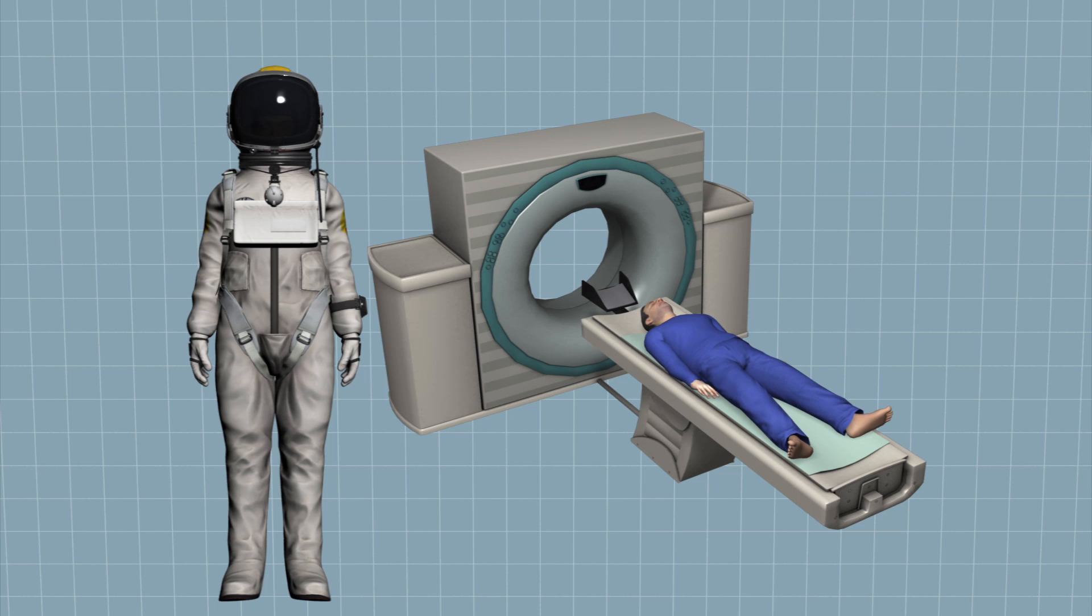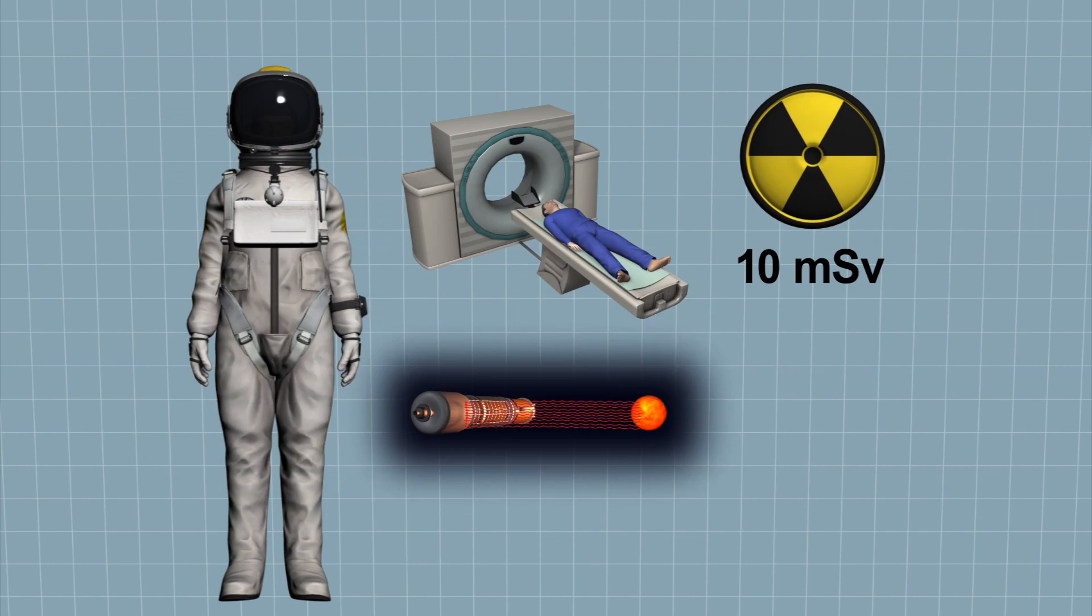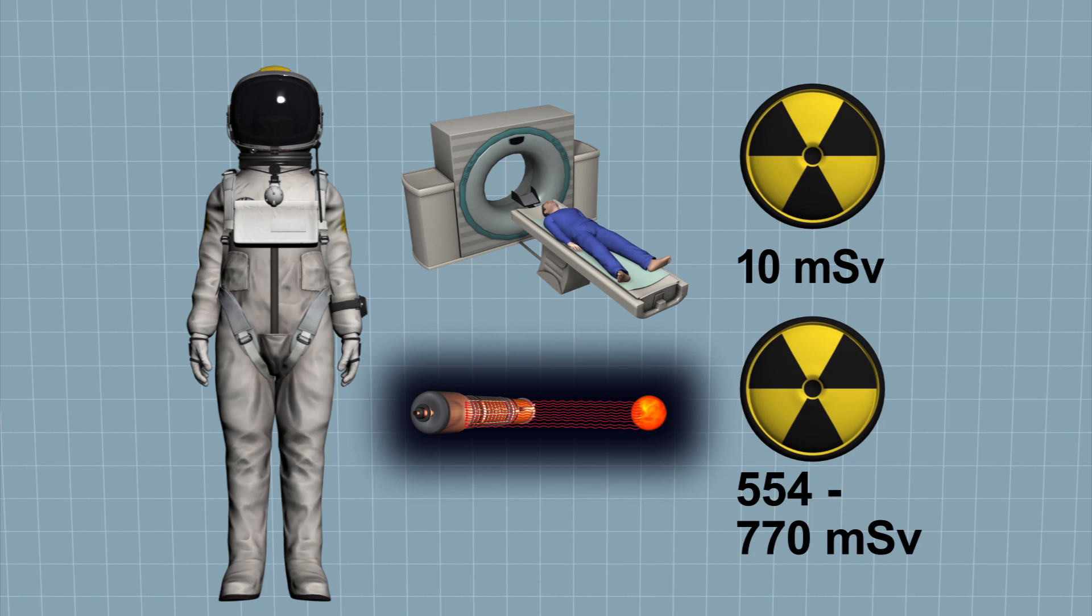An average CT scan gives a dose of around 10 mSv, whereas a round trip to Mars would expose a human to 554 to 770 mSv of radiation.